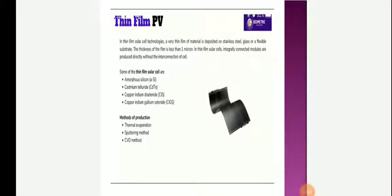Next, thin film PV. In thin film solar cell technologies, a very thin film of material is deposited on stainless steel, glass, or a flexible substrate. The thickness of the film is less than 1 micron. In thin film solar cells, integrally interconnected modules are produced directly without the interconnection of the cell.